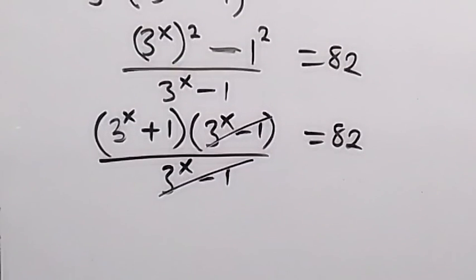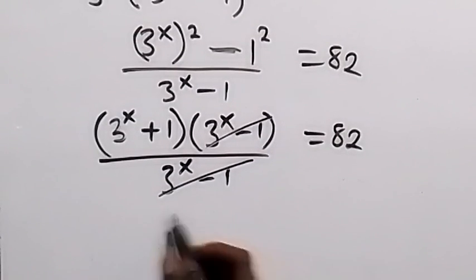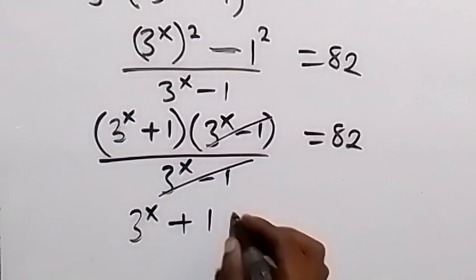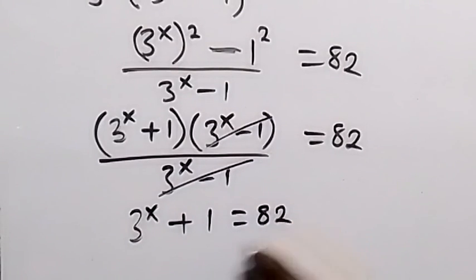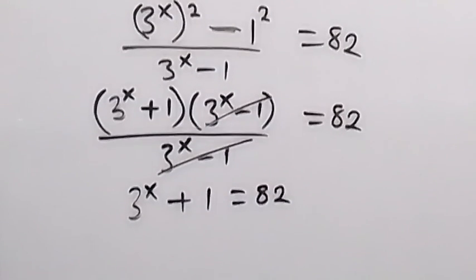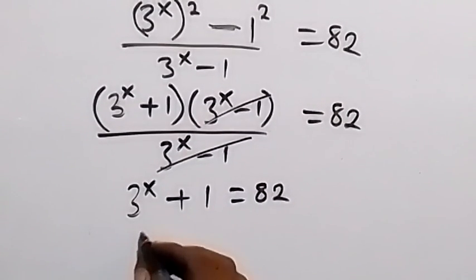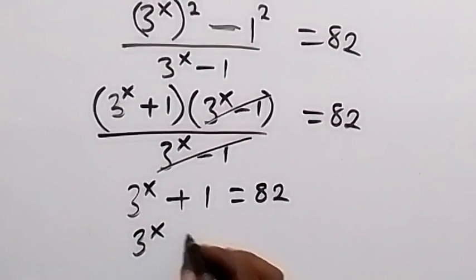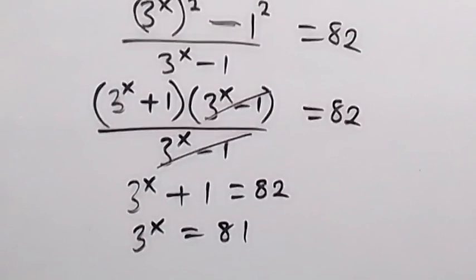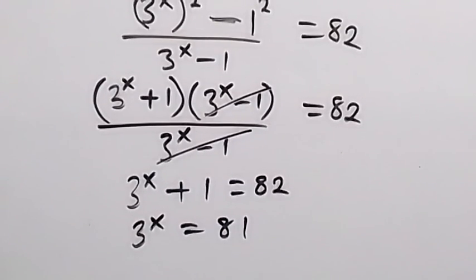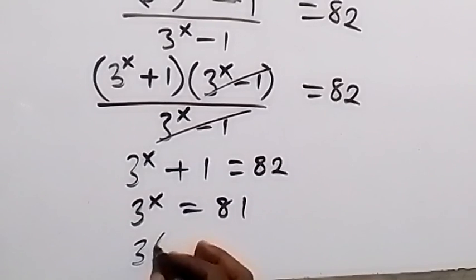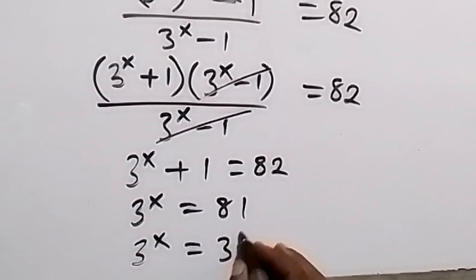So what we have left here is 3 raised to the power x plus 1, which is equal to 82. So when we take plus 1 to the other side, that's 82 minus 1, and we have 81. So we have 3 raised to the power x equals to 81. And also 81 can be expressed in base 3. So we have 3 raised to the power x equals to 3 raised to the power 4.